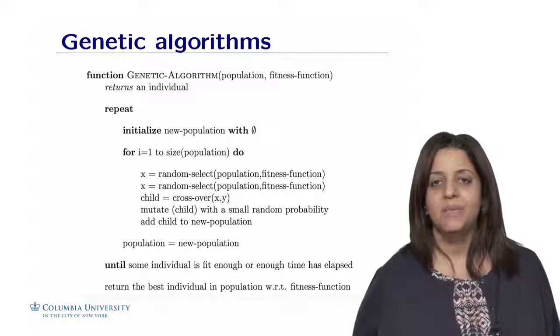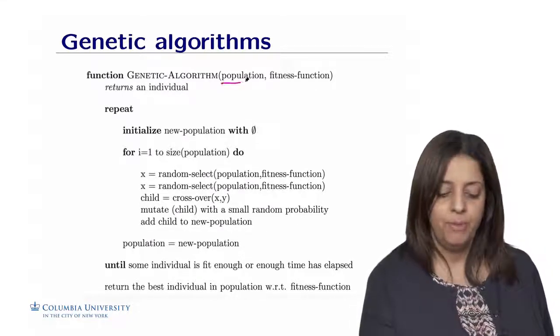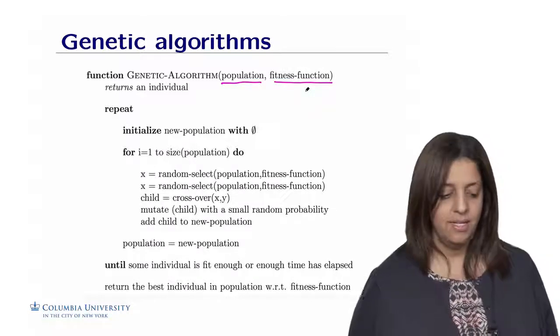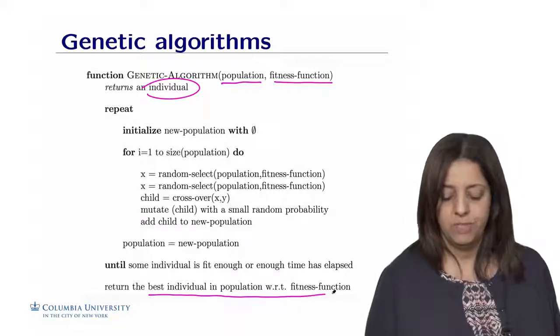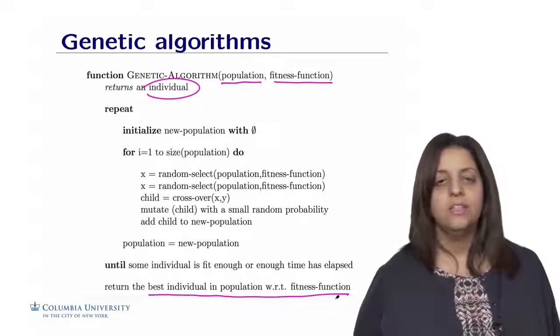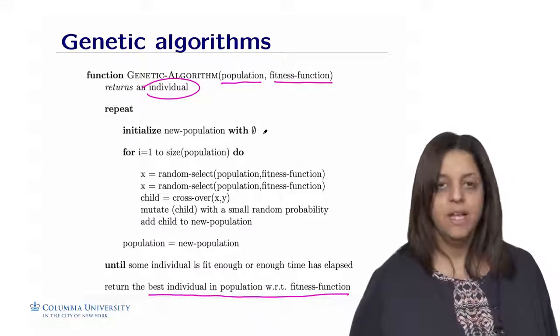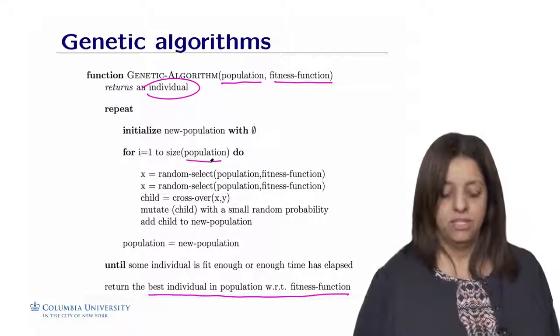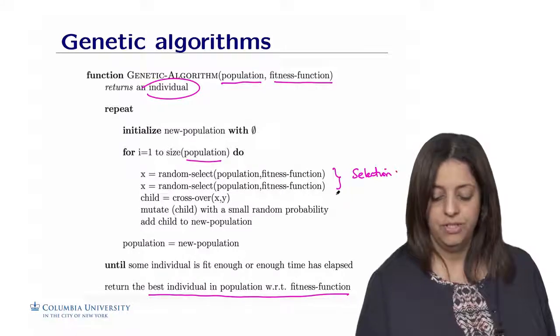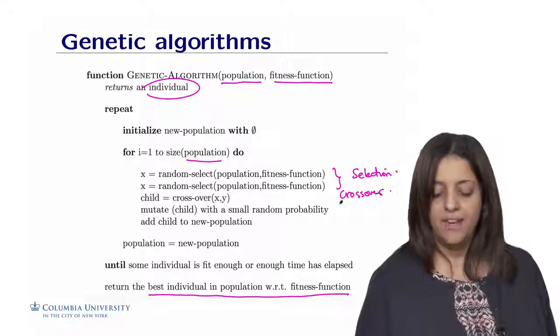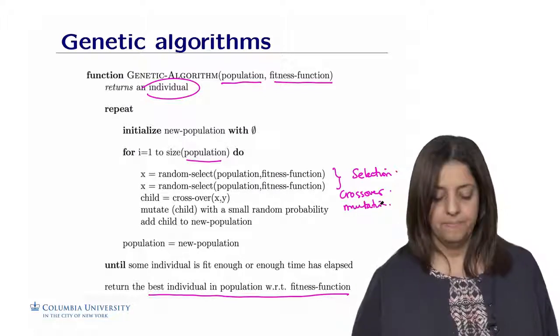The following algorithm reflects the process that we just described. So the algorithm receives as input the population and the fitness function that we want to maximize. And we return an individual, and this individual is the best one in the population with respect to that fitness function. So the process is to start a new population. Initially, the population is empty. There are no individuals. We are going to go over our population, do the process of doing a selection, selection of the parents to crossover. Crossover. And finally, do some mutation with some random, small random probability. This will create a new child, and we need to add this child to the new population.